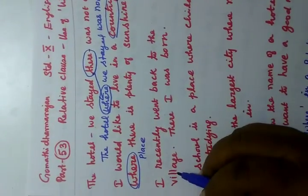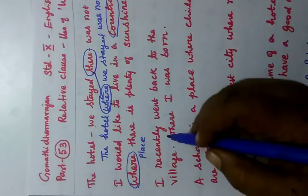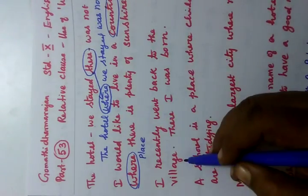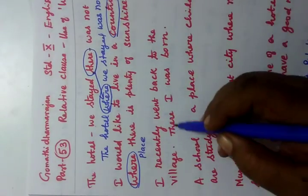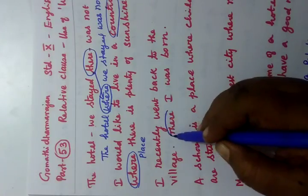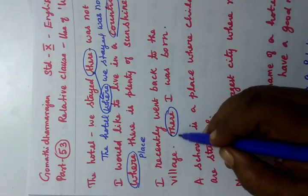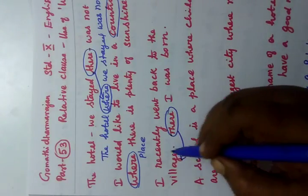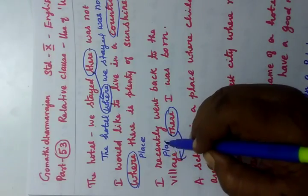Now you see the third one. 'I recently went back to the village where I was born.' In that village you have the place, so where you are supposed to use place — we use 'where'.